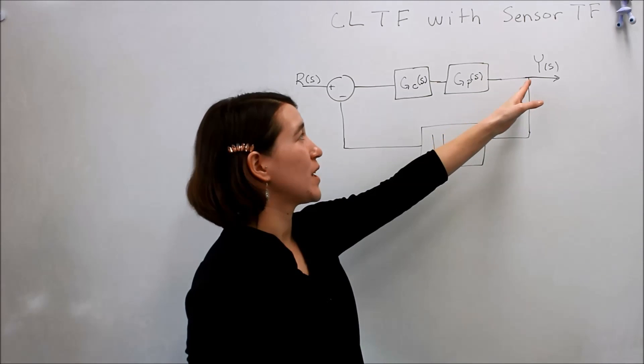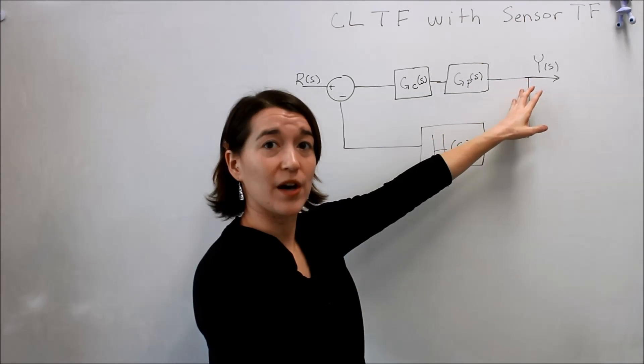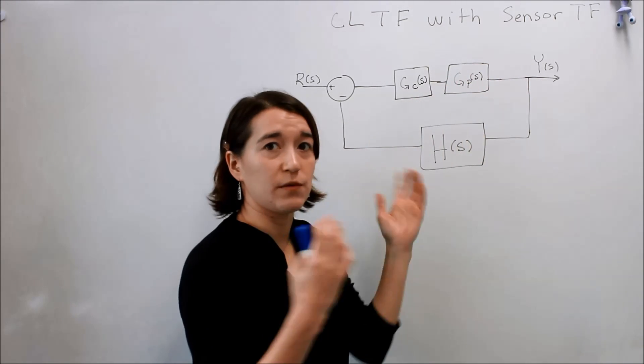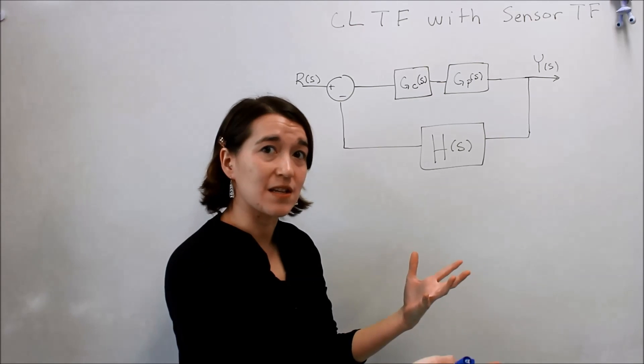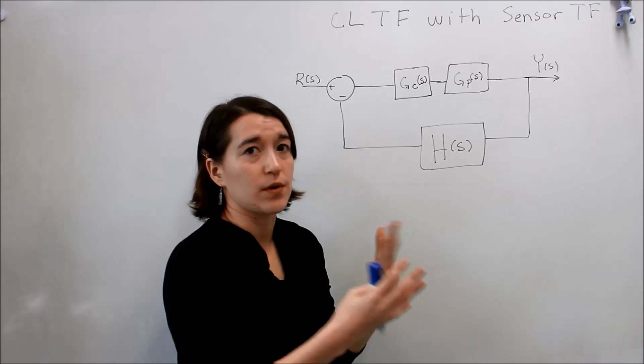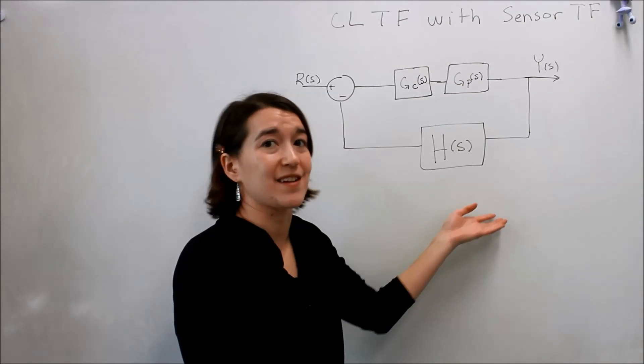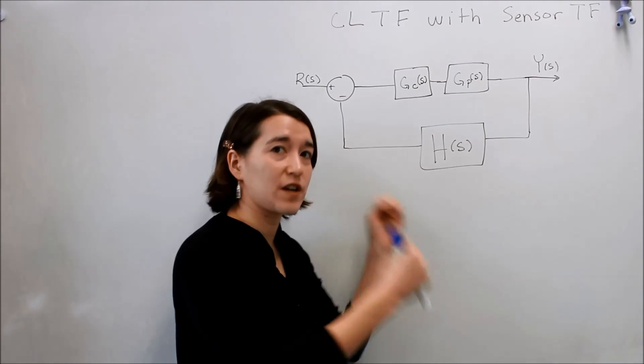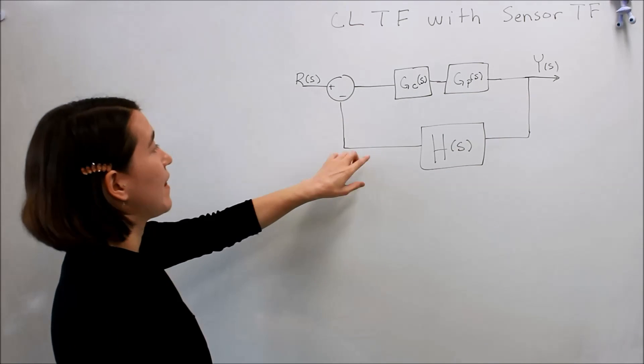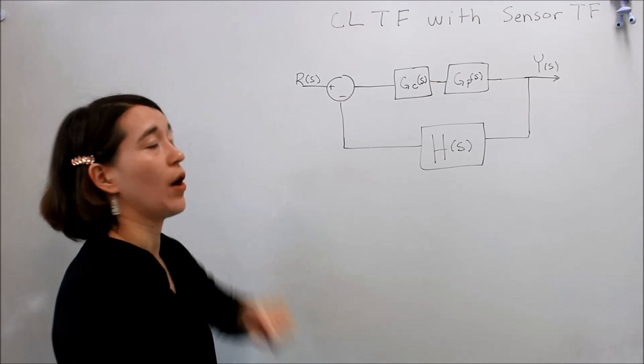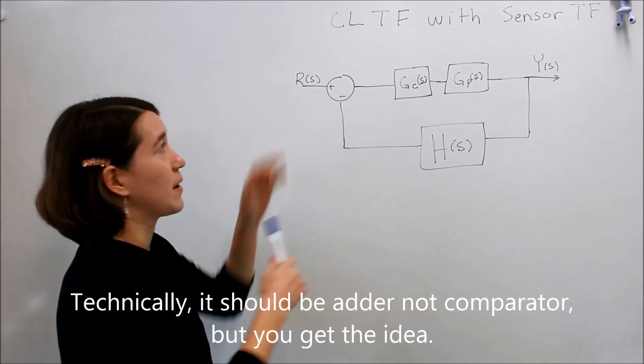Say for example we need to measure this value y, but in real life we have some sort of sensor that does that. When we measure something through a sensor, we sometimes have some sort of effect in the measurement. So there's also a transfer function for this sensor measurement, and then that output would go into our comparator and compare it to our reference.